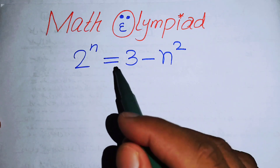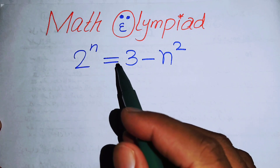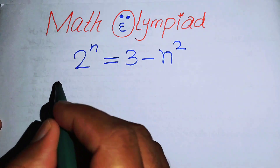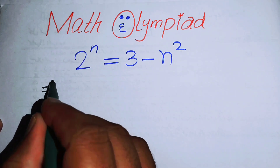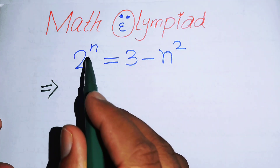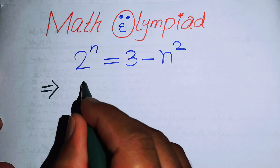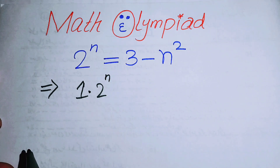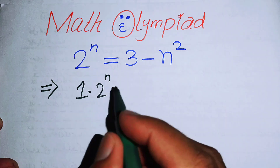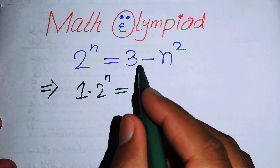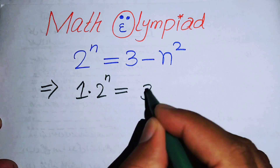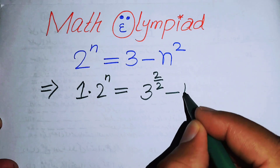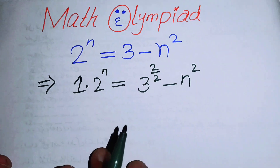The very first thing we are going to do is rewrite this equation. In the first step, I can write 1 times 2 to the power of 1 on the left side, since it does not affect the expression. On the right side, we write 3 as 3 to the power of 2 over 2, minus n squared.